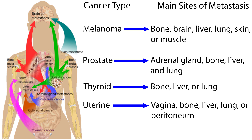Melanoma can go to bone, brain, liver, lung, skin, or muscle. Prostate cancer metastasizes to the adrenal gland, bone, liver, and lung. Thyroid cancer moves to the bone, liver, or lung. Uterine cancer can move to the vagina, bone, liver, lung, or peritoneum.